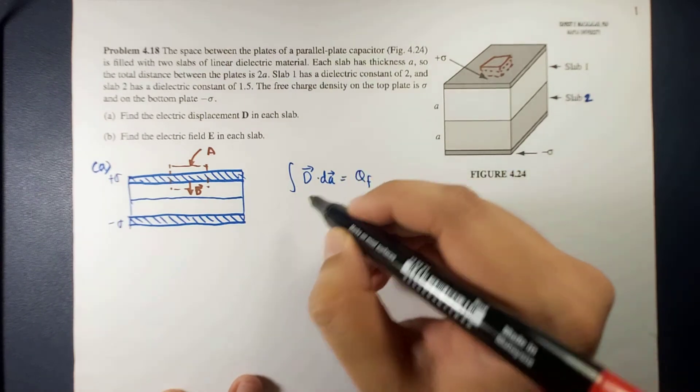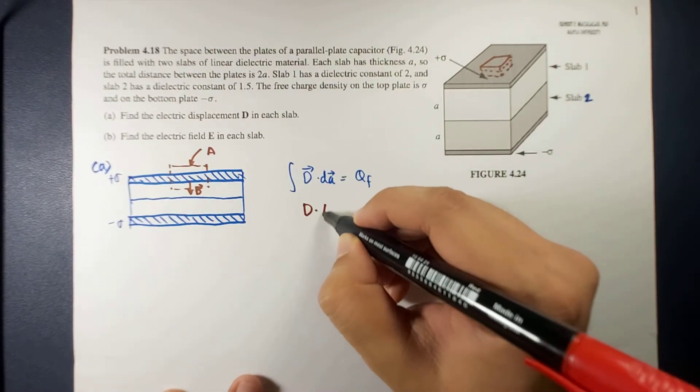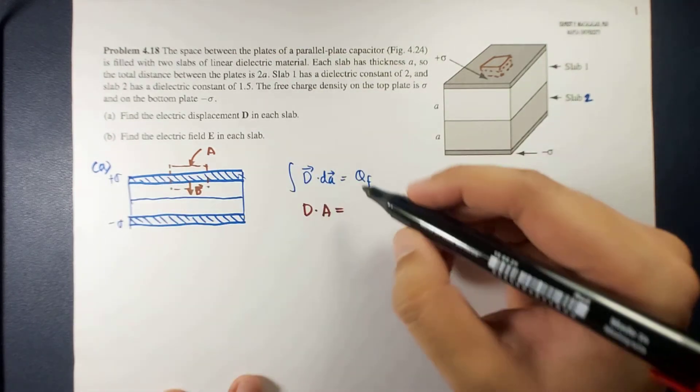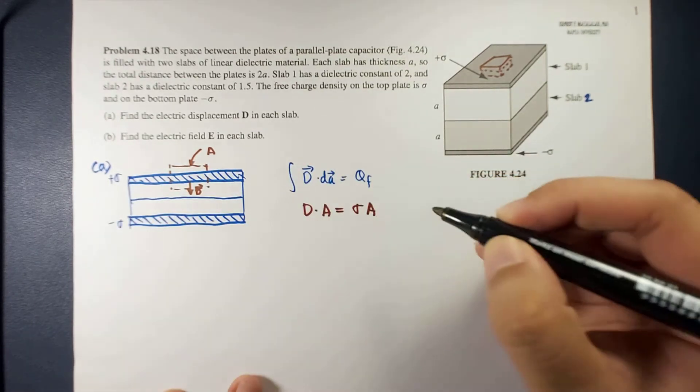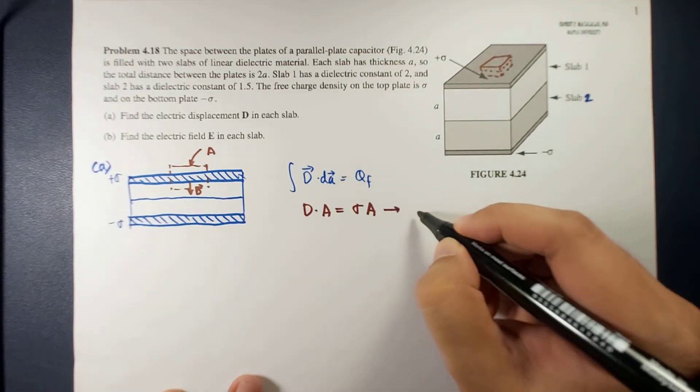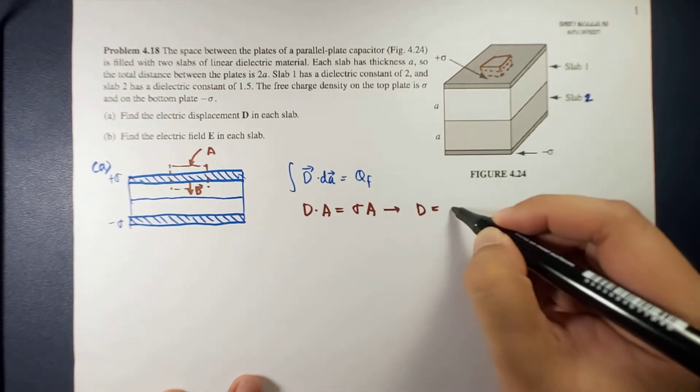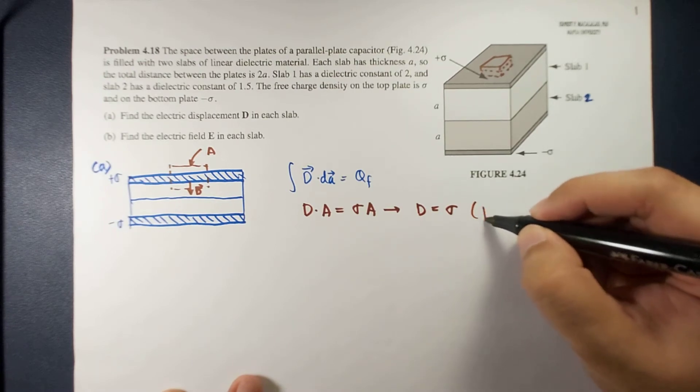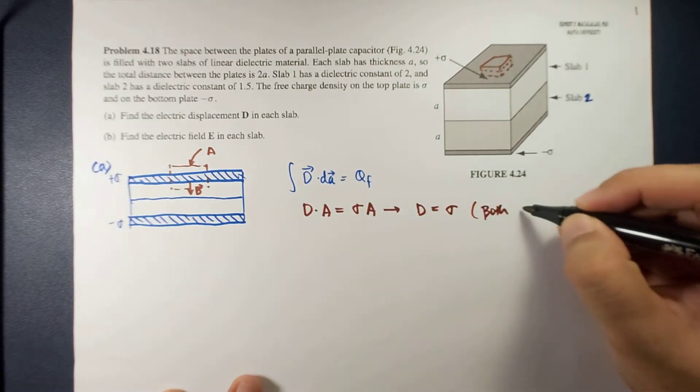Okay, so that means we can rewrite this as D times A equals q free, which is sigma times A. Therefore, D is equal to sigma. And this is applicable for both slabs.